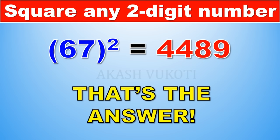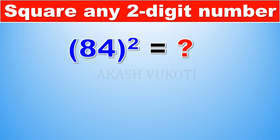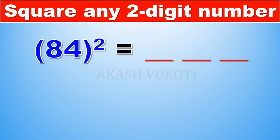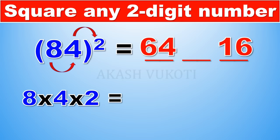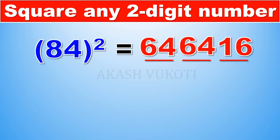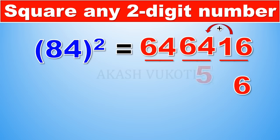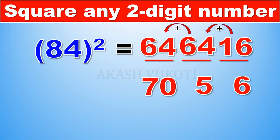Our final example is 84 squared. We split it into three parts: the first part is 8 squared = 64, the last part is 4 squared = 16, and the middle part is 8 times 4 times 2 = 64. Starting with 16: keep the 6, carry the 1 to 64 making it 65. Keep the 5, carry the 6 to 64 making it 70.